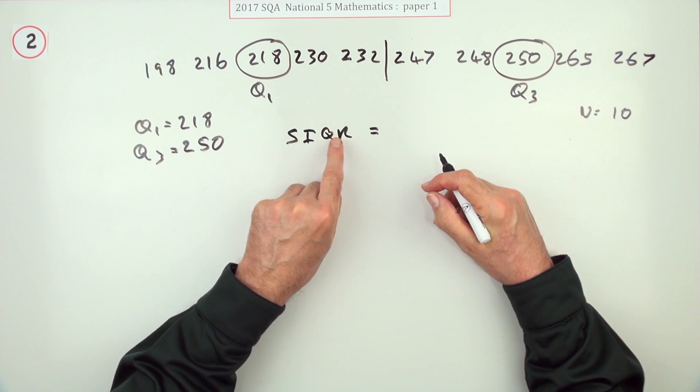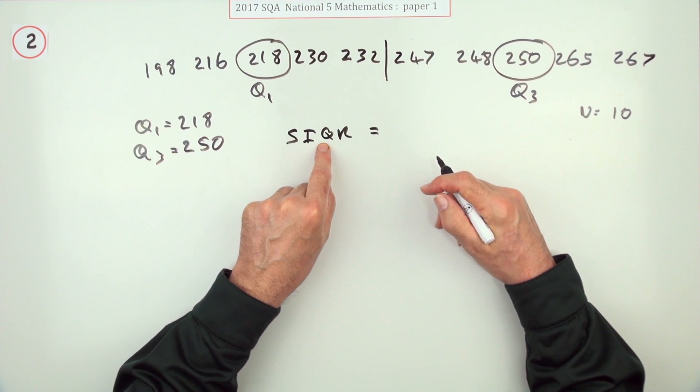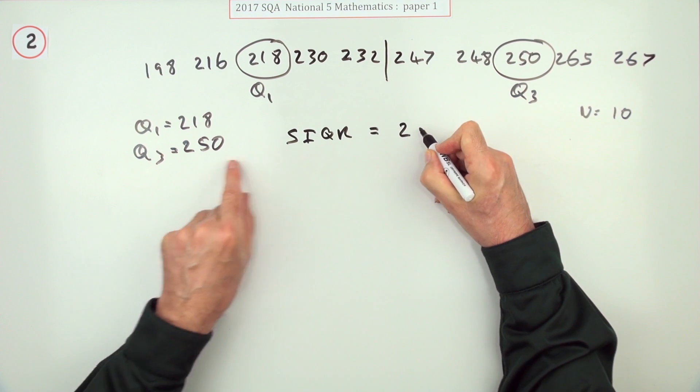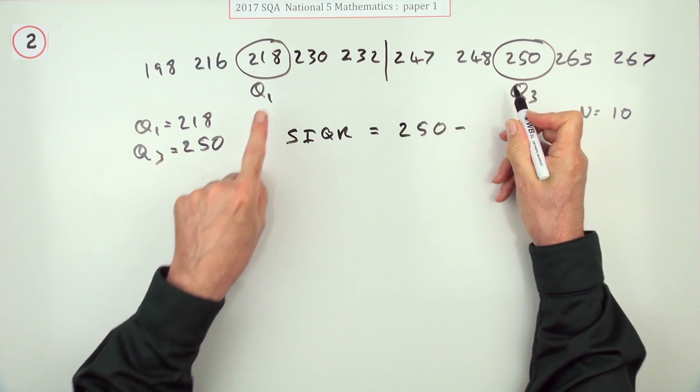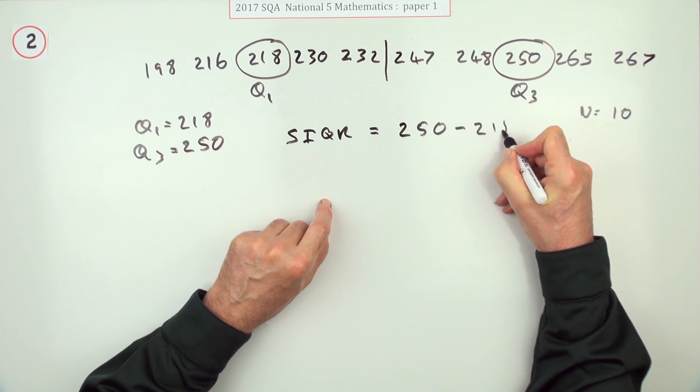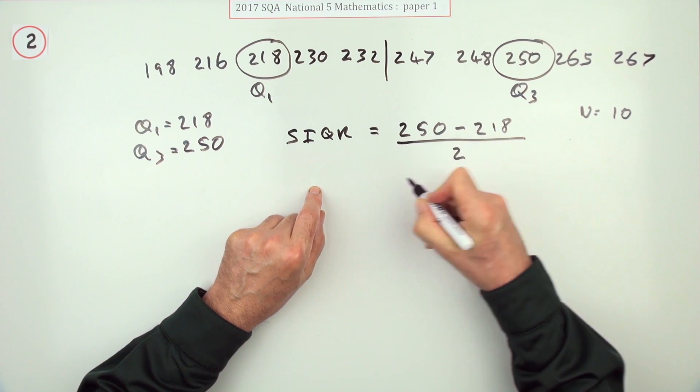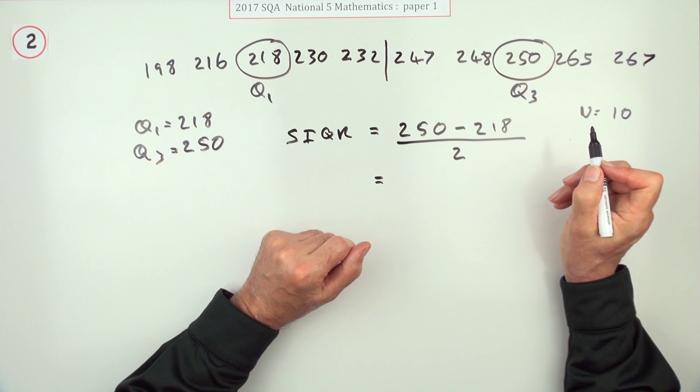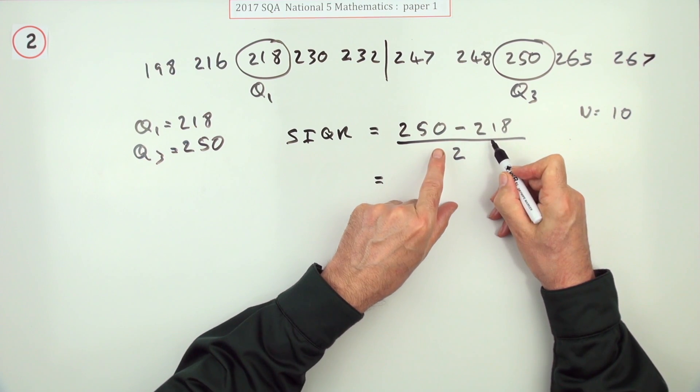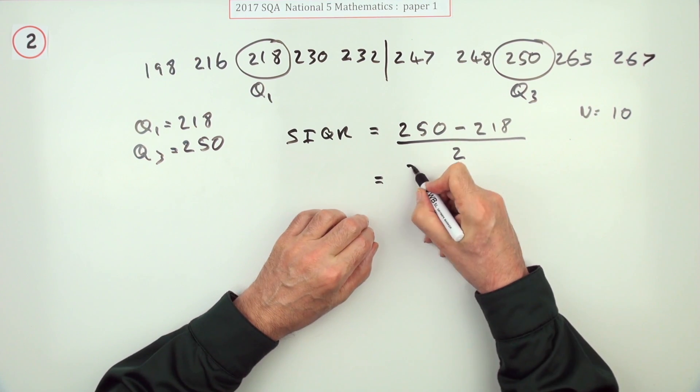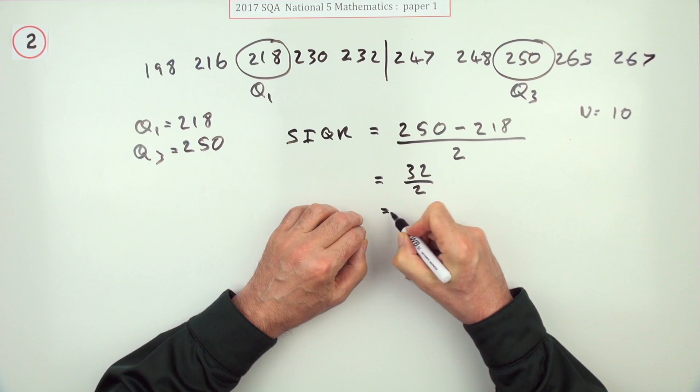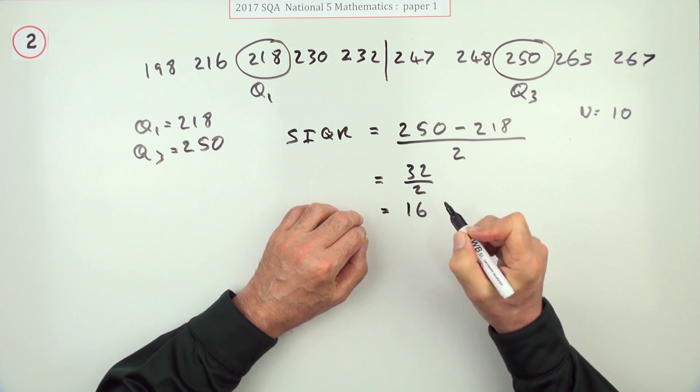Well, the highest quartile was the 250, the lowest quartile was the 218. You find the difference between them and half that, that's the calculation. If you subtract them, that'll be 32, and if you halve 32 you get 16.